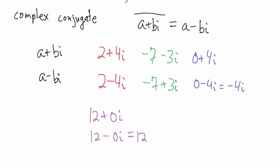Going back to our examples: 2 plus 4i — the conjugate of that equals 2 minus 4i. Negative 7 minus 3i — the complex conjugate, denoted with that bar, equals negative 7 plus 3i. For 4i, the complex conjugate is 0 minus 4i, which is negative 4i. And for 12, or 12 plus 0i, the conjugate is 12 minus 0i, which is just 12.